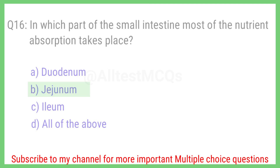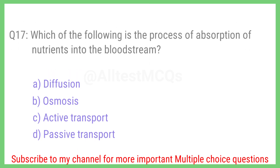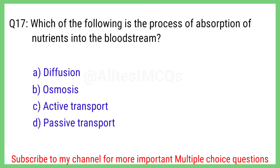Question number 17. Which of the following is the process of absorption of nutrients into the bloodstream? The right answer is option D. Passive transport.